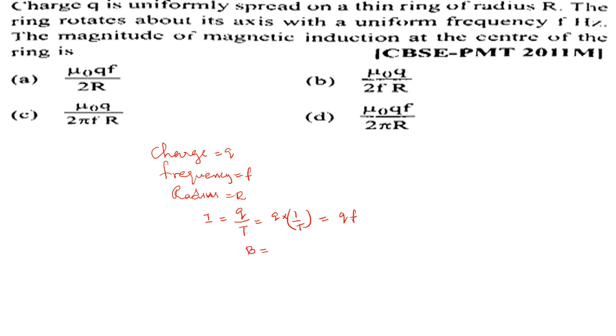Magnetic field at the center of the ring. B equals μ₀I by 2R. That is, magnetic field at the center of the circle. That is the formula.